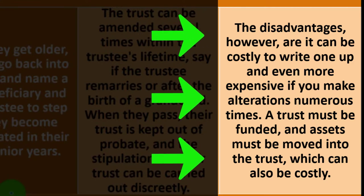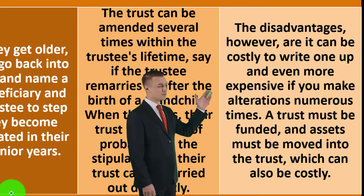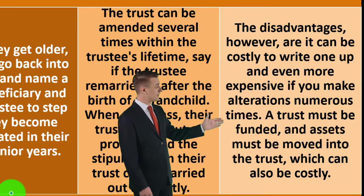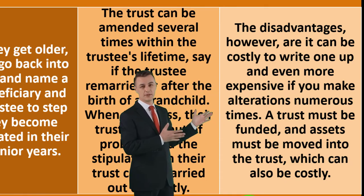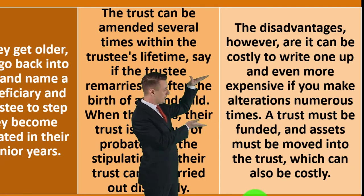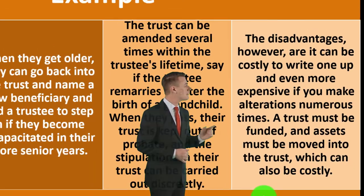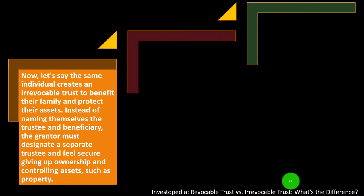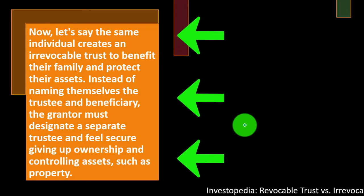Disadvantages of a revocable trust include that it can be costly to write up, and even more expensive if altered numerous times — typically requiring a lawyer. A will, by contrast, is generally less costly to set up. A trust must also be funded, meaning assets must be moved into it, which can also be costly.